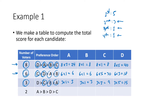Two ballots here with A in first place — first place is worth five — so A gets two times five, which is 10. B is in second place, so B gets three points for each of those ballots, which is two times three. D and C are in third and fourth place in this case, so that's two times one and two times one.